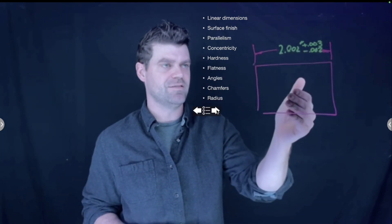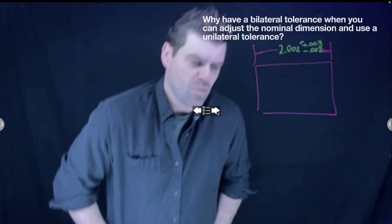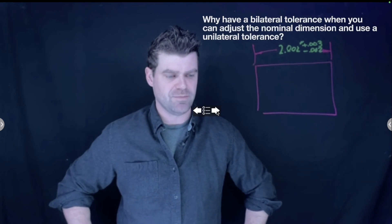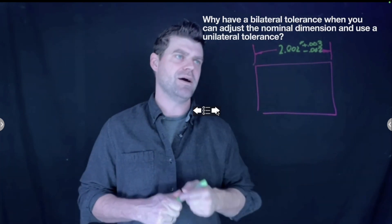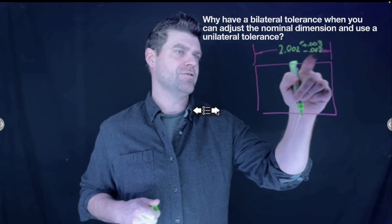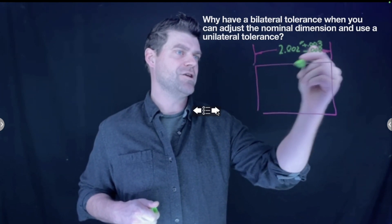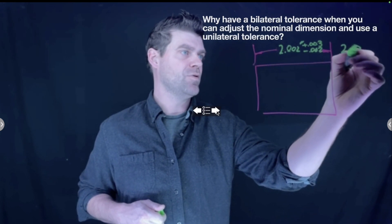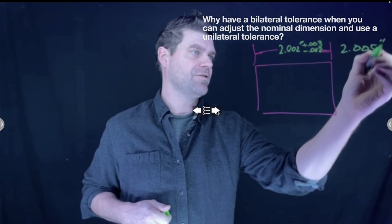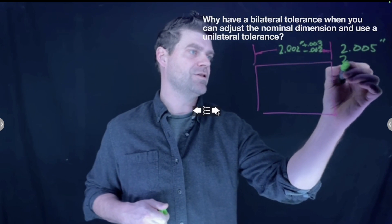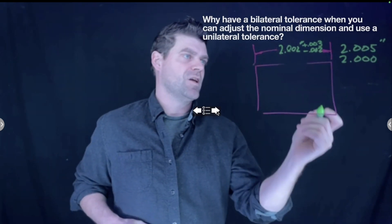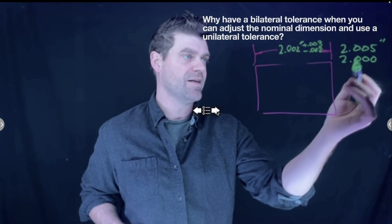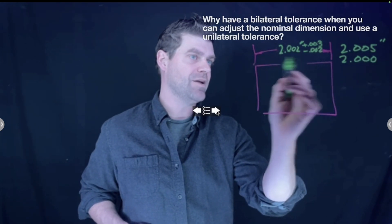Next question is, why have a bilateral tolerance when you can just adjust the nominal dimension and use a unilateral tolerance? So what I mean by that is, I have here a range of five thou. So in this dimension of this part, I can be at a maximum two inches and five thousandths of an inch, or at a minimum I can be two inches. So why would I rate it where it's two inches plus five thou minus two thou in this bidirectional, when instead I could write that dimension as two inches?